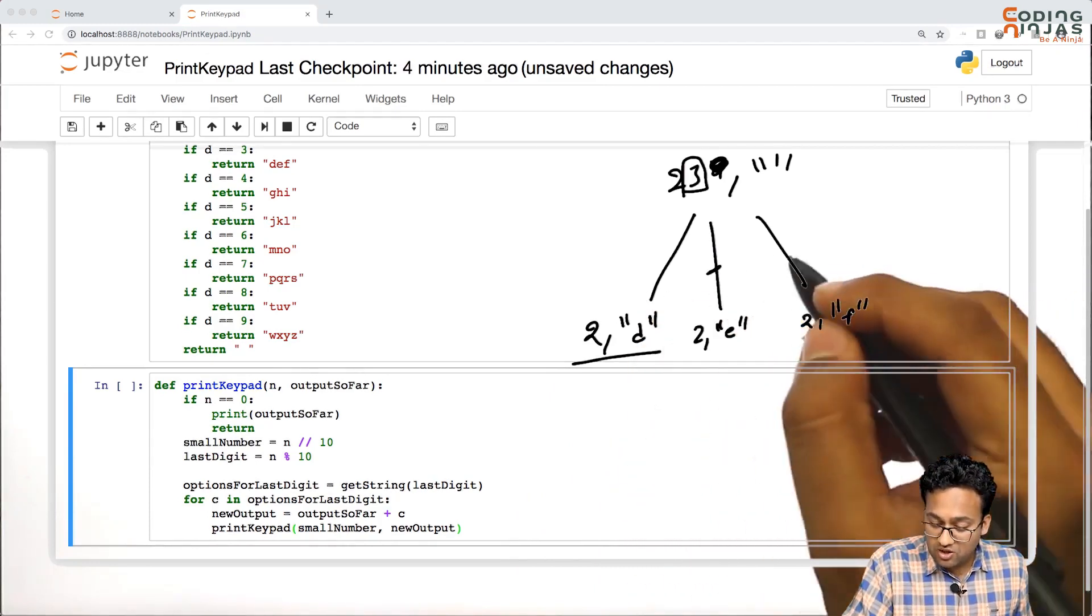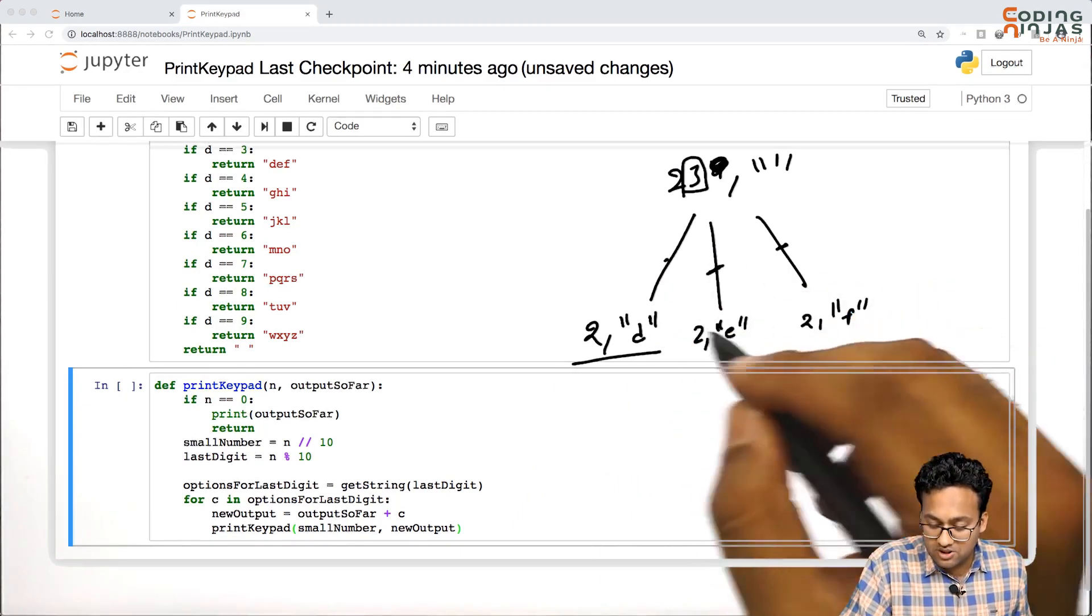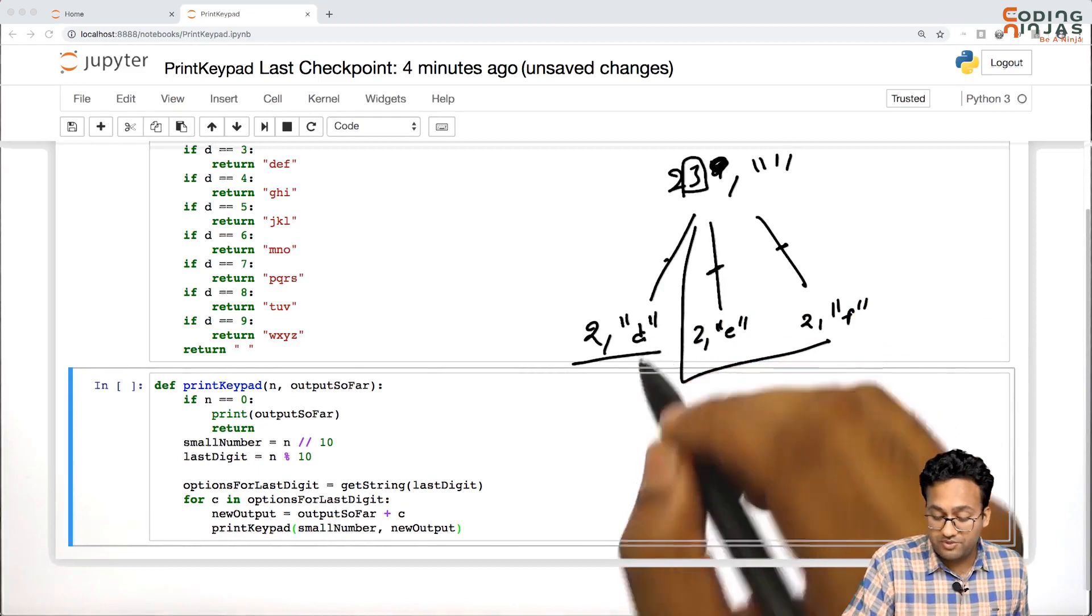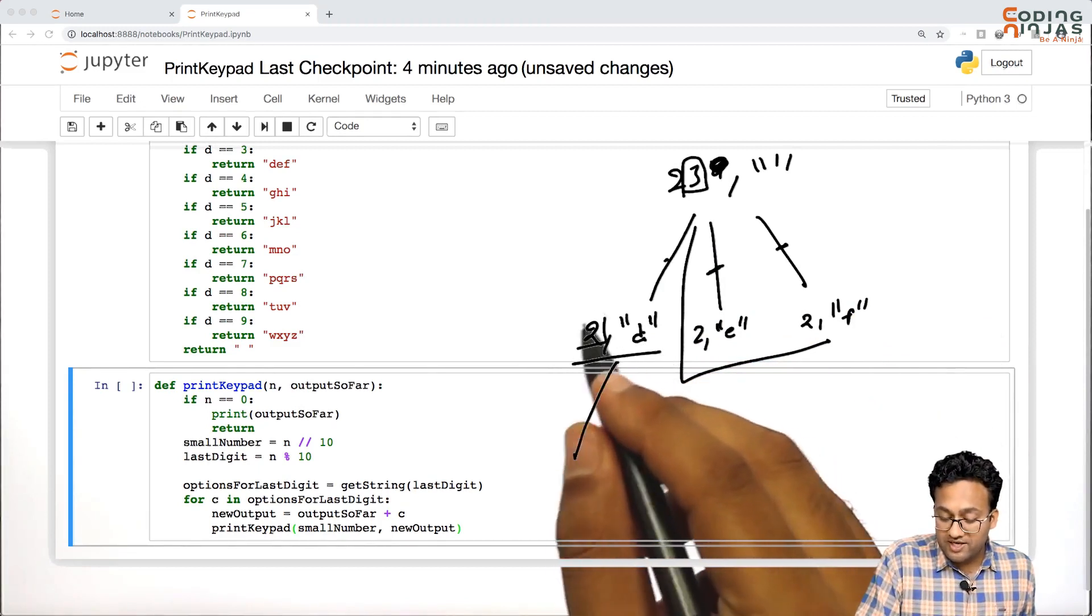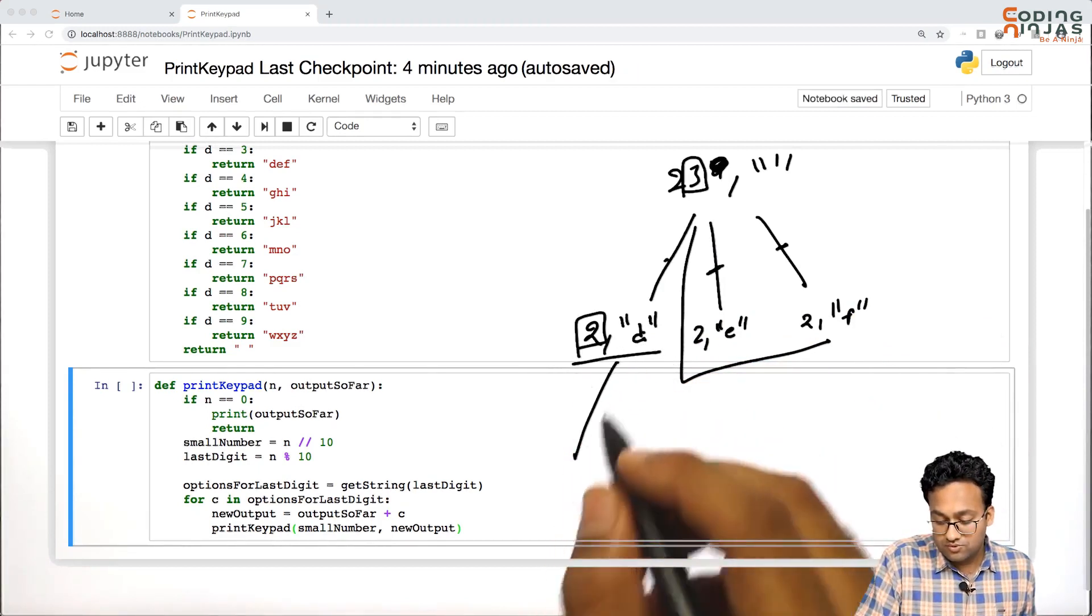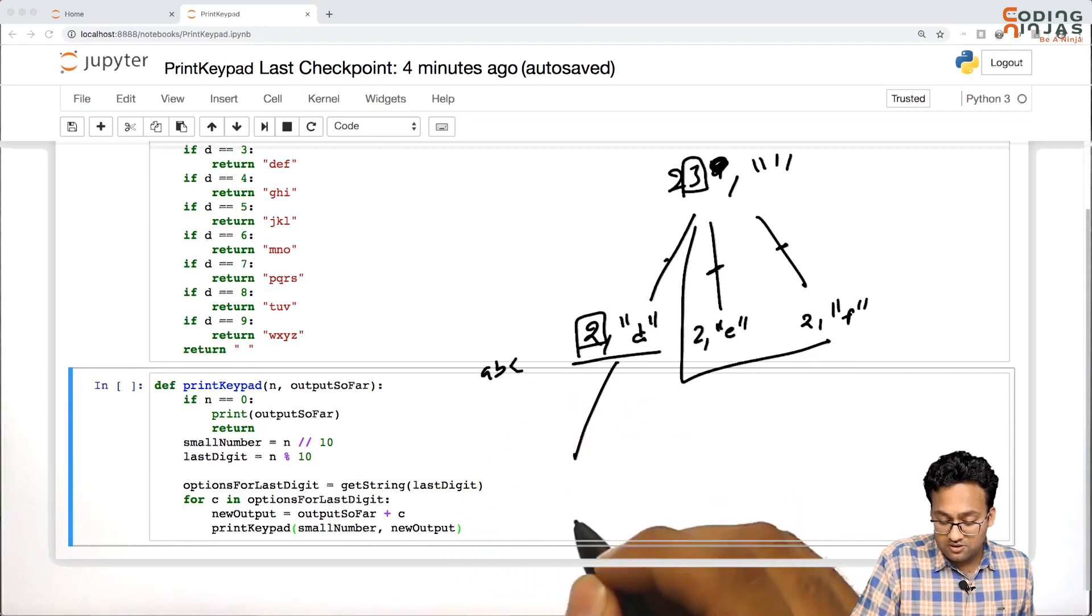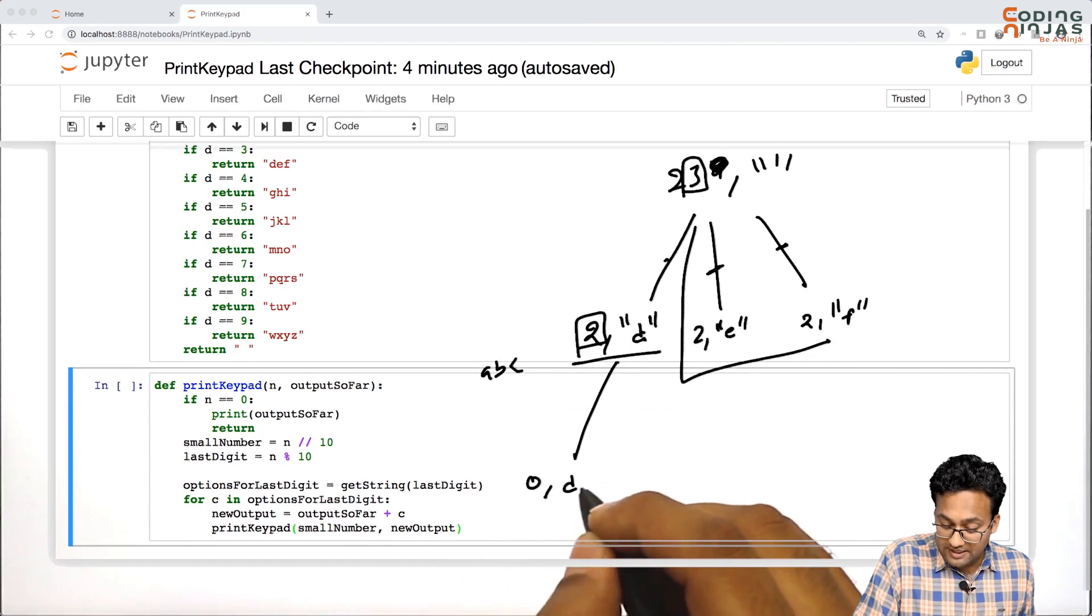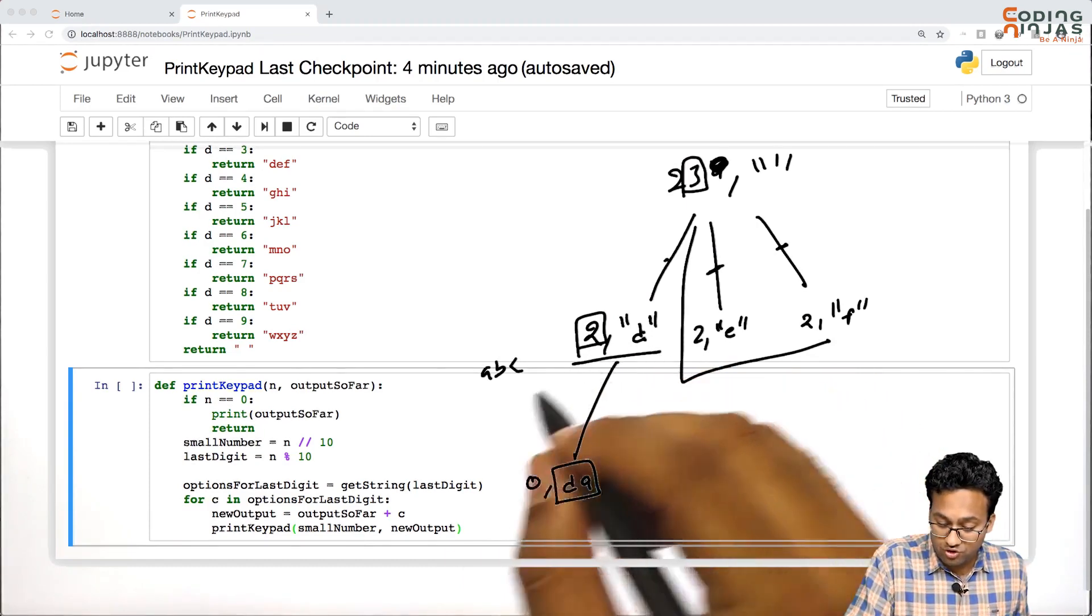Then you will take a decision corresponding to 2 and make this recursive call one after the other. So you will reach here only when this is done. Once you have made this call, now you will take a decision on 2. 2 is abc, so 0 comma d - it seems like a problem.